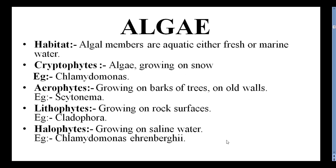What is the habitat of Algae? Mostly they are aquatic — some present in freshwater or marine water. They are divided depending on habitat: Cryophytes grow on snow, example Chlamydomonas. Aerophytes grow on barks of trees and old walls, example Cytoon. Lithophytes grow on rock surfaces, example Cladophora. Halophytes grow in saline water, example Chlamydomonas ehrenbergii.